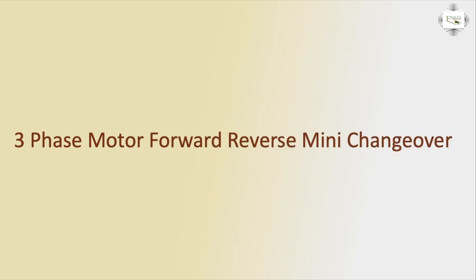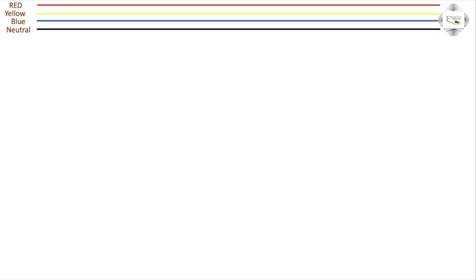Hello viewers. Today we discuss the three-phase motor forward and reverse mini changeover system — means three-phase motor forward running or reverse running. First, the connection: red, yellow, blue neutral three-phase line, red yellow blue with neutral, TP MCB three-pole circuit breaker.